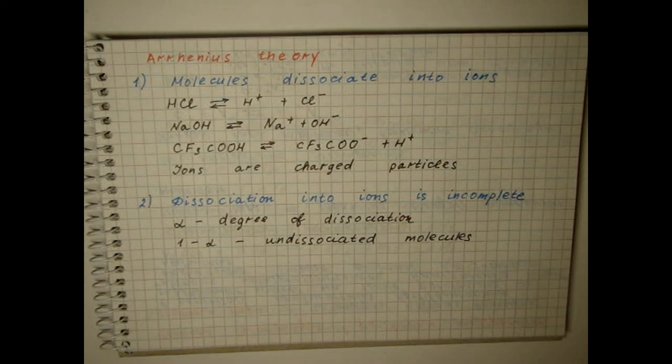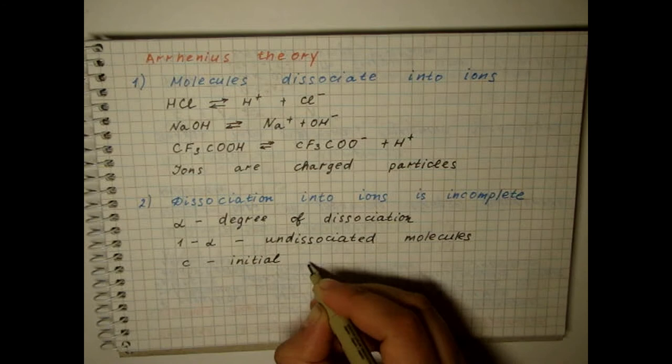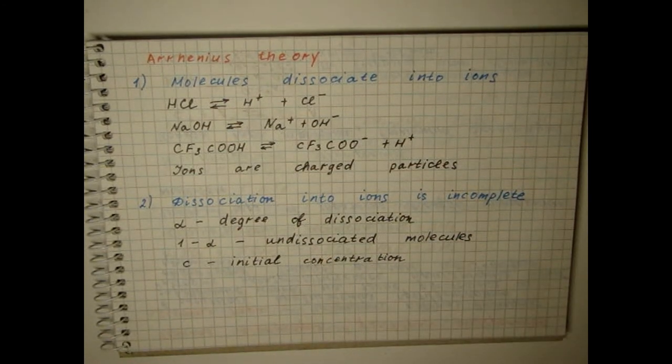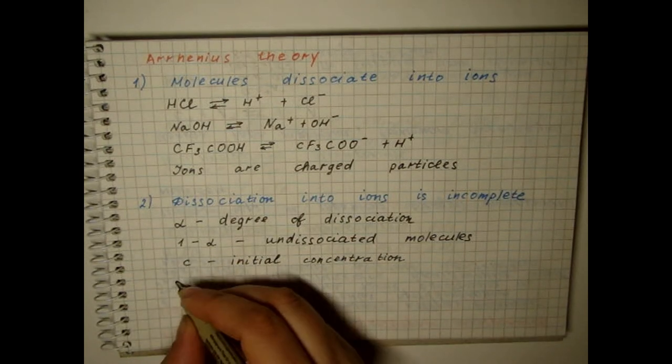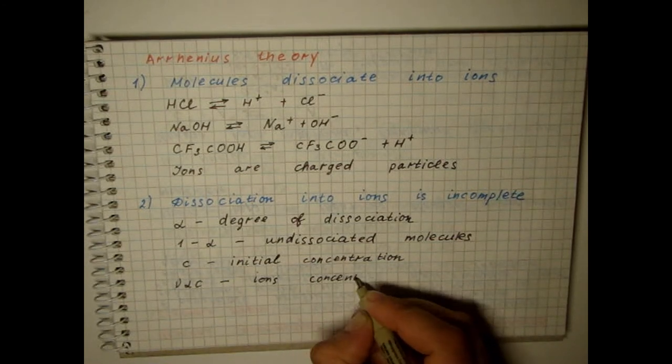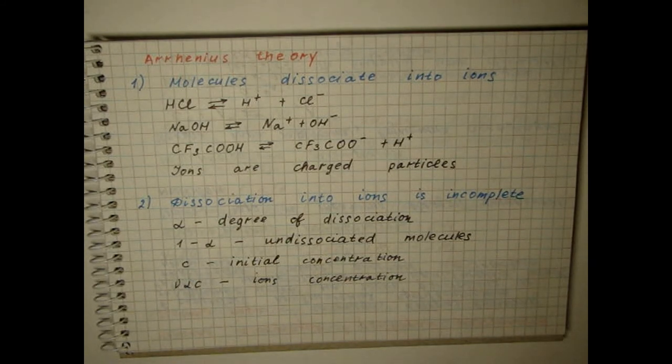Suppose that one molecule forms nu ions. The initial concentration is denoted by C. Then, the concentration of ions in the solution will be equal to nu alpha C. And the concentration of undissociated molecules is (1 minus alpha)C.